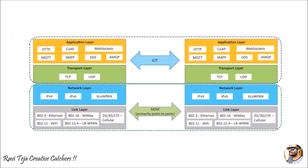Looking at the diagram, for IoT communication the application layer includes HTTP, CoAP, WebSockets, MQTT, XMPP, DDS, and AMQP. The transport layer includes TCP and UDP. All this comes under IoT software processing. For machine to machine, it is a point-to-point communication between machines, and at the network layer it mostly uses IPv4 or IPv6, as M2M is considered an IP-based protocol at the network level.